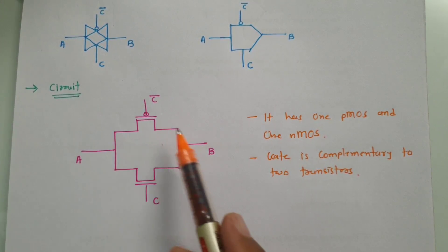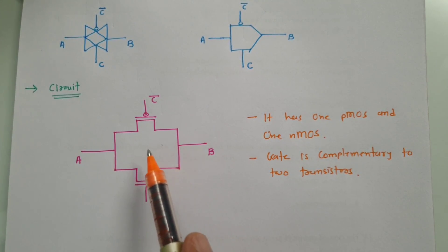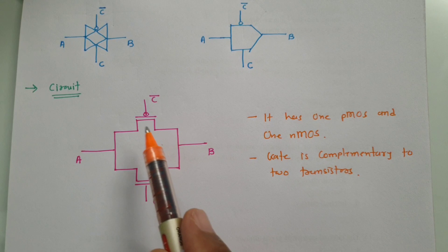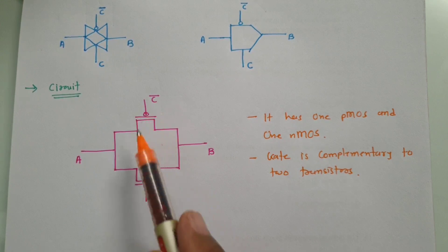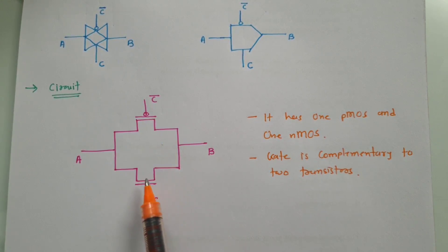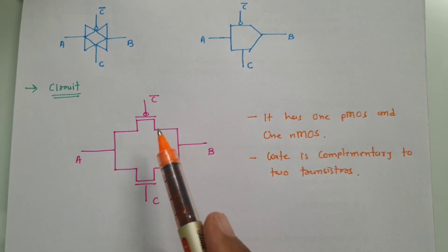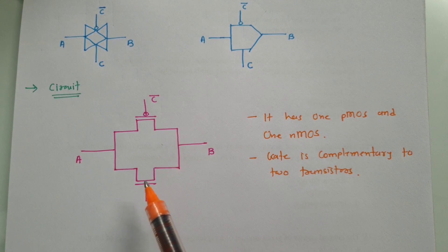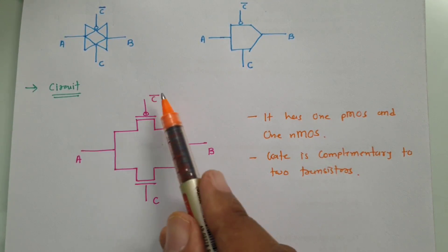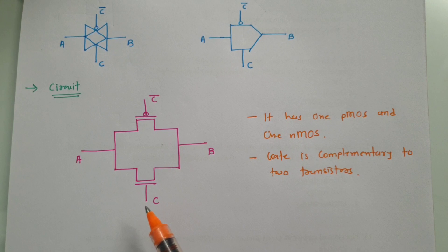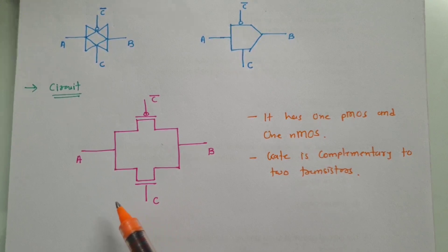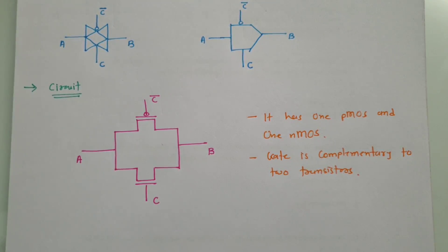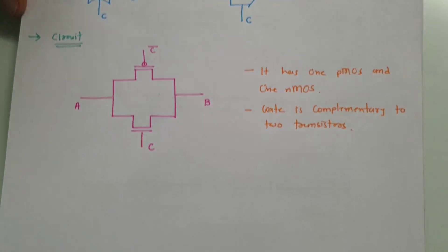The CMOS transmission gate structure has one NMOS and one PMOS, and the gates are complementary to each other — that is what our control signal does. Now I'll explain how CMOS transmission gate is working as a tri-state.